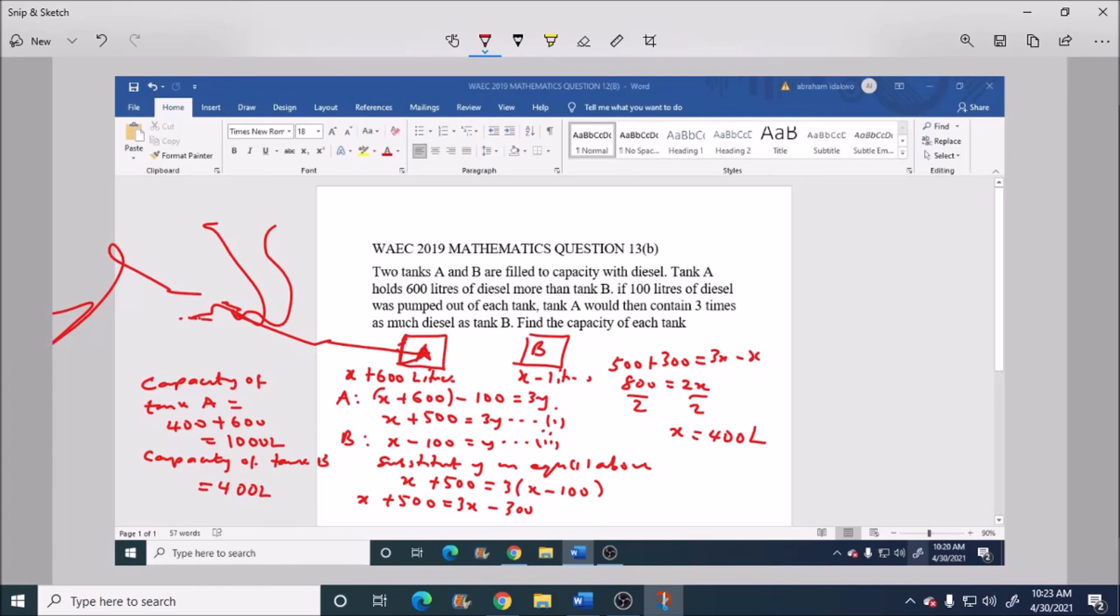We have been able to find the capacity of each tank. The capacity of tank A is 1000 liters, and the capacity of tank B is 400 liters.